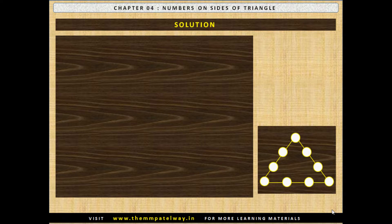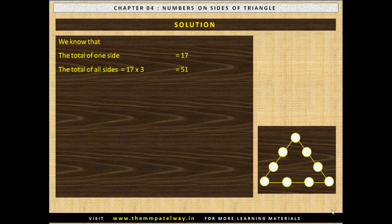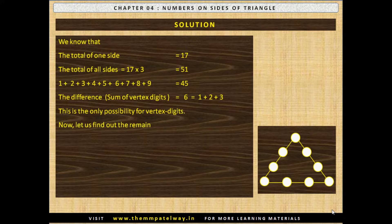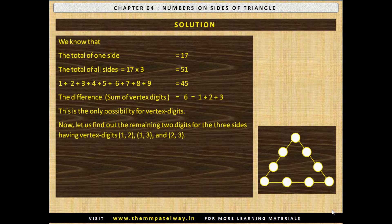Now let us see the solution. The total of 1 side is equal to 17. The total of all sides will be 17×3, that is 51. The sum of digits 1 through 9 is equal to 45. The difference between 51 and 45 is 6, which equals 1+2+3, and this is the only possibility for vertex digits. Now let us find out the remaining 2 digits for the 3 sides having vertex digit pairs 1–2, 1–3 and 2–3.